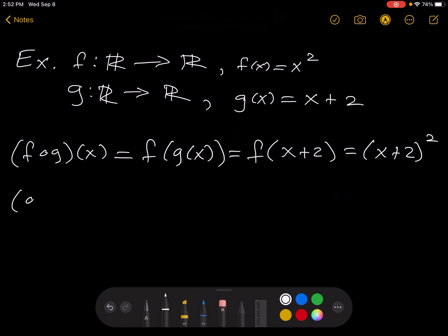Now let's find g composed with f of x. By definition, this is g of f of x. So now we're going to find g of f of x, which is x squared. And now again, let's think,